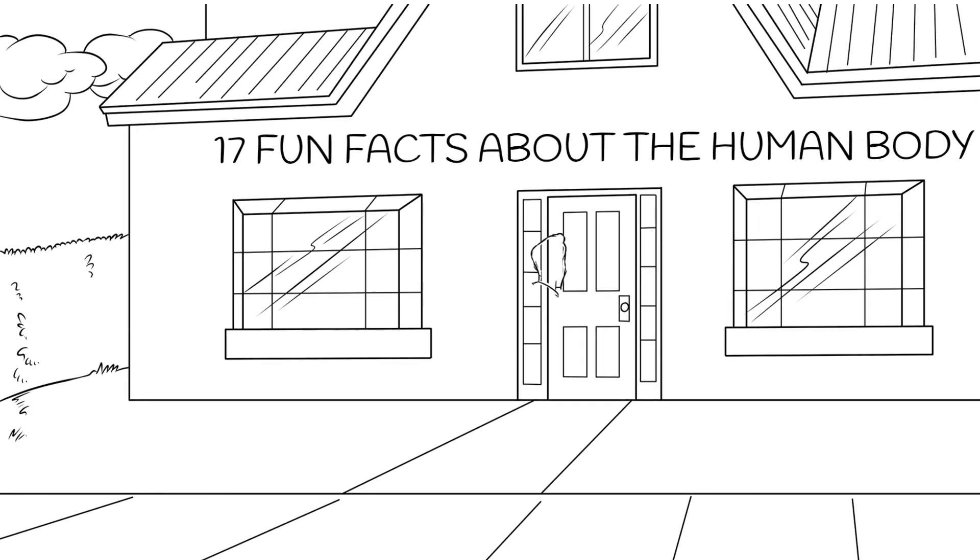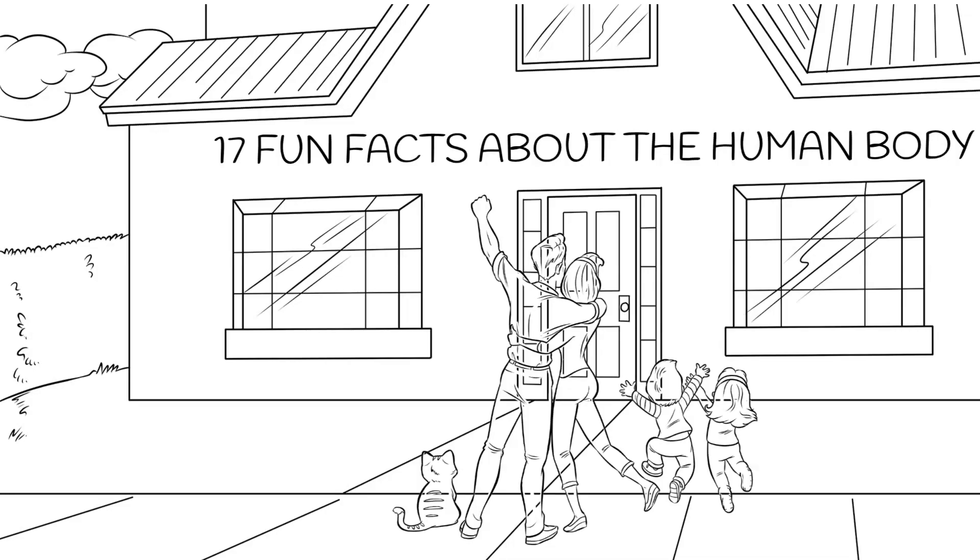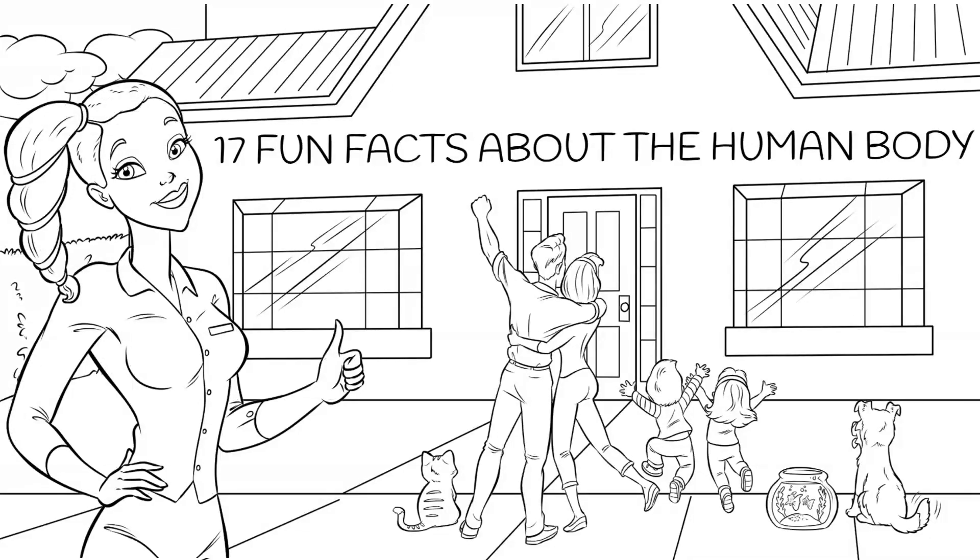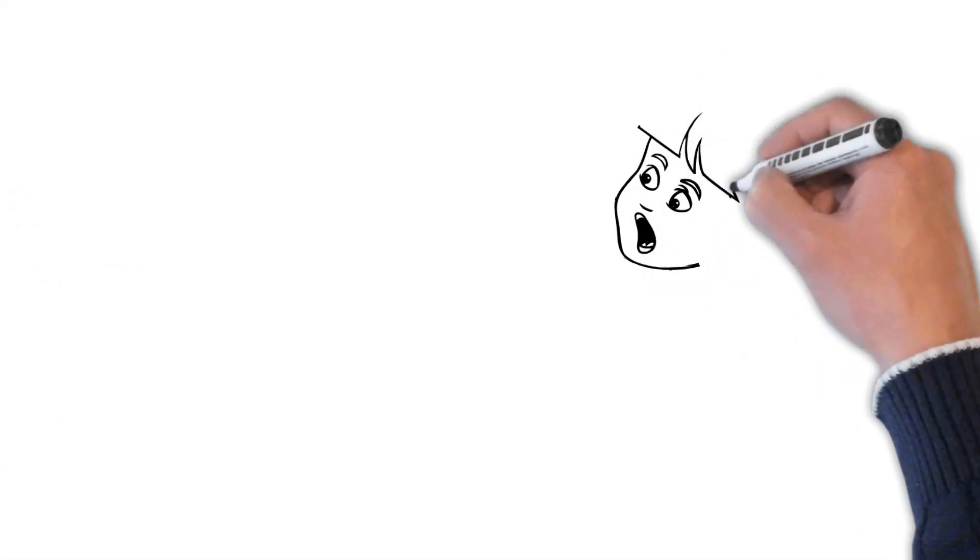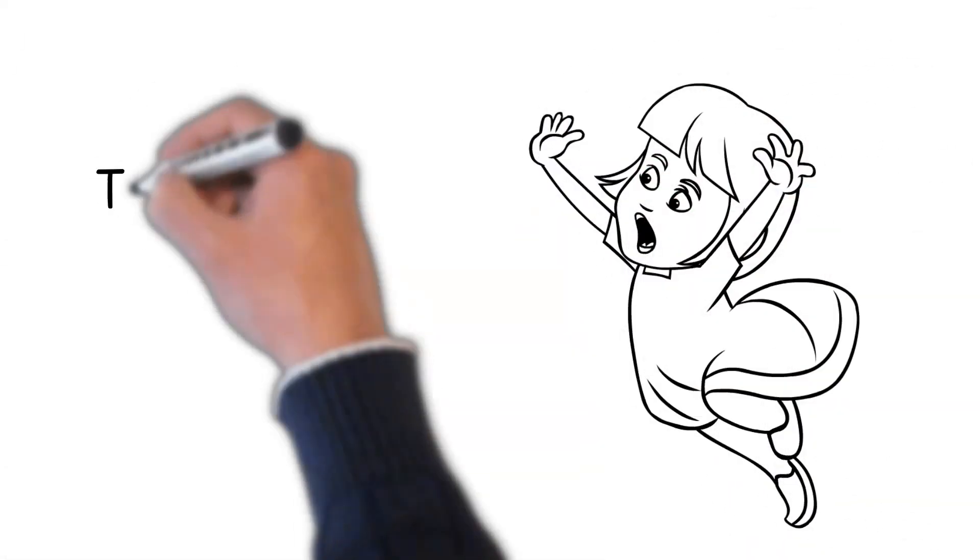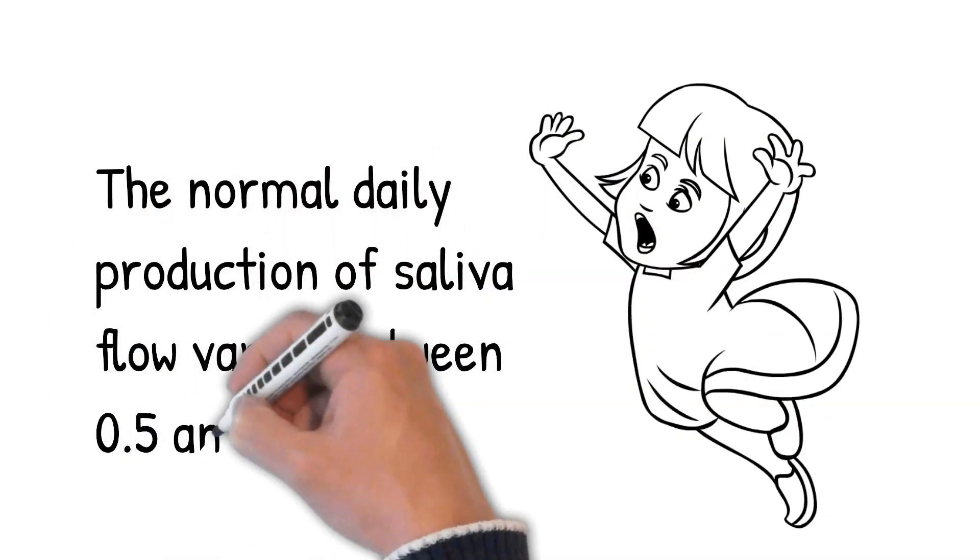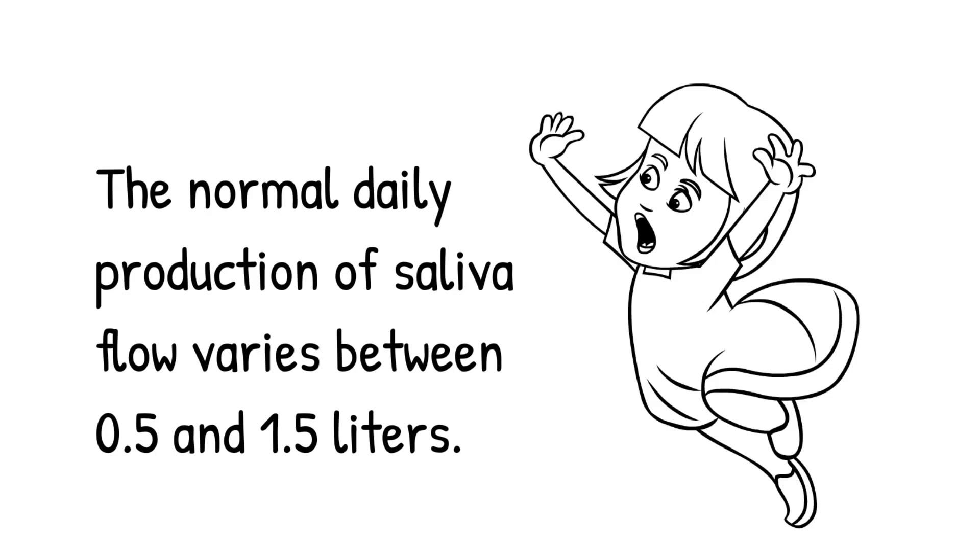Here are 17 fun facts about the human body. The normal daily production of saliva flow varies between 0.5 and 1.5 liters.